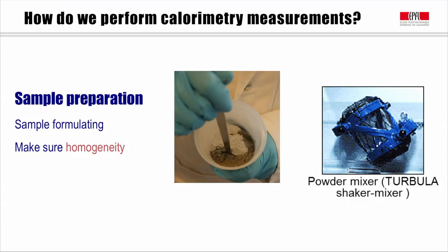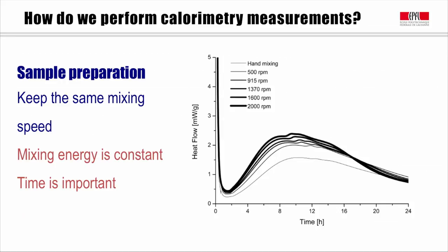For mixing the sample, it is not mandatory to use one specific type of mixer. But the most important thing is to keep using the same mixing speed and duration time. The figure shows the difference for using different speeds. Because of different shear rates and mixing energy, the samples which mixed with higher mixing speed shows higher heat flow.